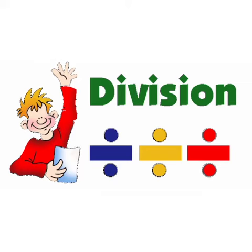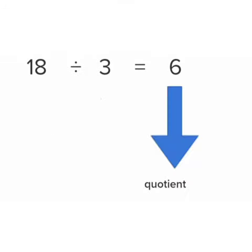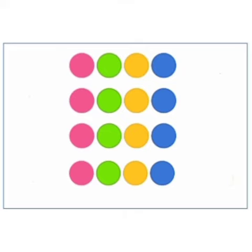Now let's move on to division. What is division? Division is a method of distributing a group of things into equal parts. Division is an operation inverse of multiplication. The 3 main parts of division are the dividend, the divisor, and the quotient.